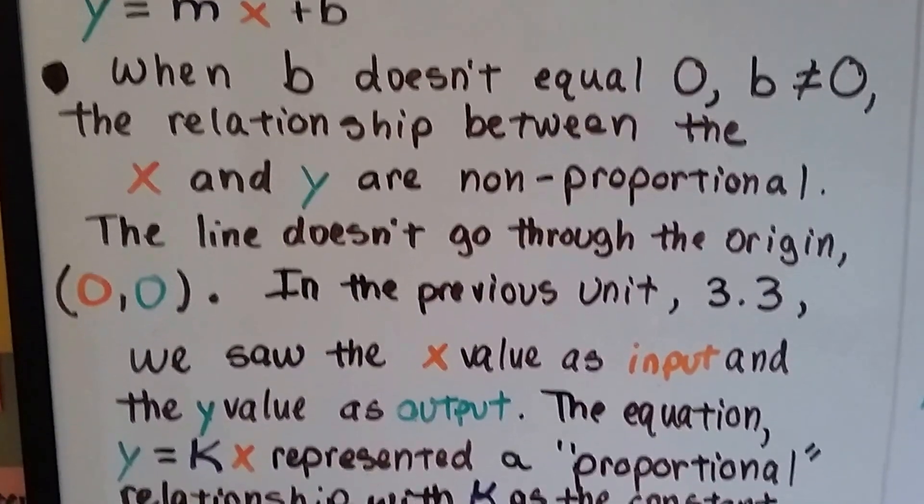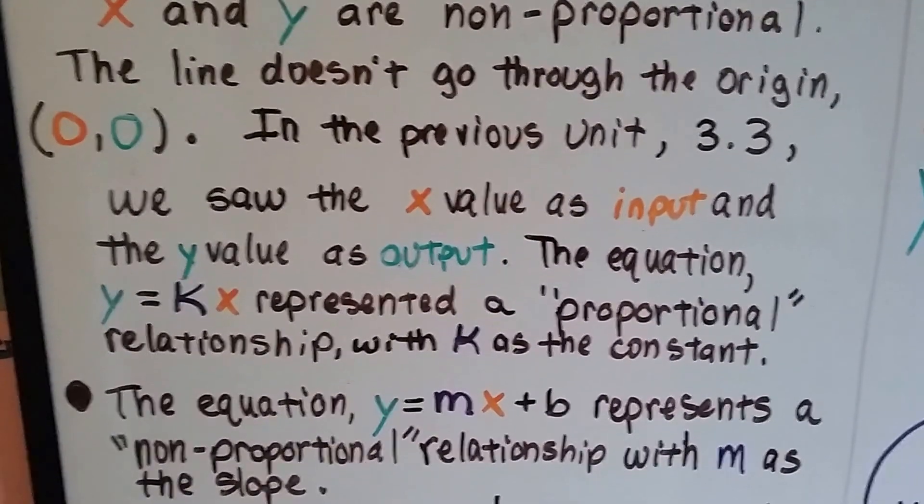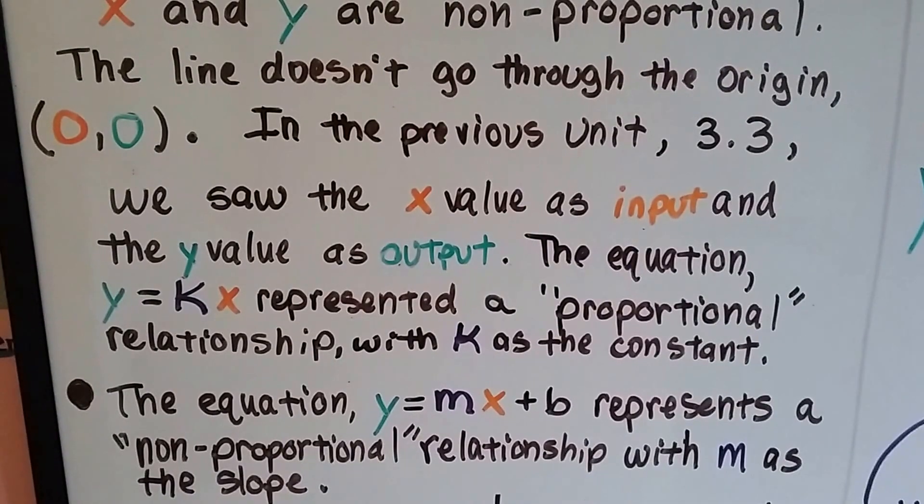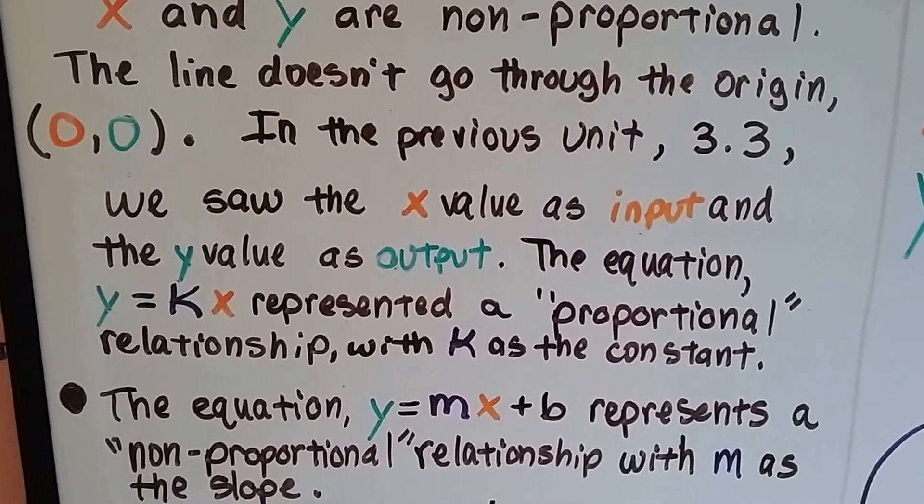In the previous unit 3.3, we saw the x value as input and the y value as output. The equation y equals kx represented a proportional relationship with k as the constant. Remember the constant of proportionality?